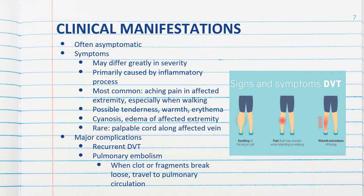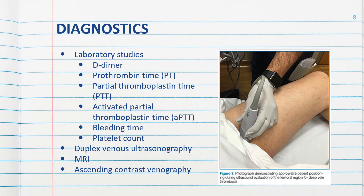The effect on gas exchange depends on the size of the embolism and the size of the vessel that is occluded. Laboratory studies that may be ordered include a D-dimer, the PT and PTT, activated partial plasma time, and bleeding time and platelet count.